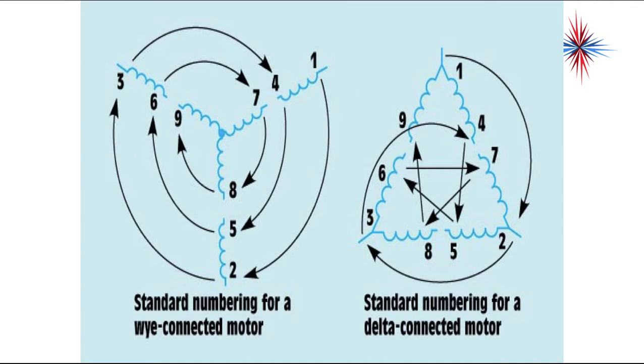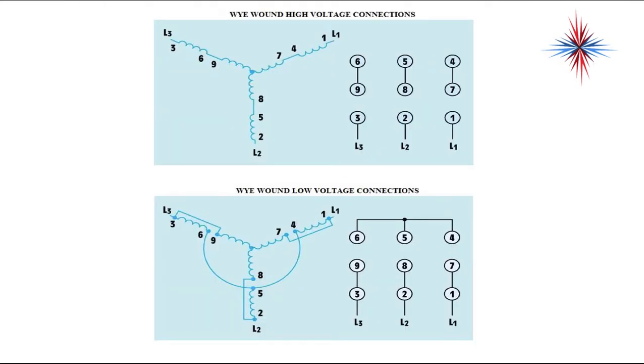Standard numbering for a delta-connected motor, going in a clockwise rotation, you have 1, 4, 7; 2, 5, 8; 3, 6, and 9. And if you look at these wires, it makes a lot of sense.